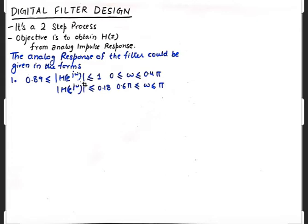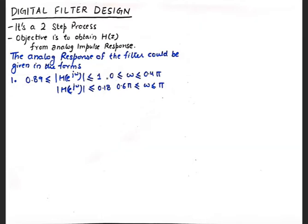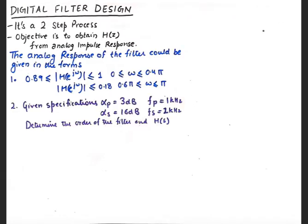In the magnitude format, between 0 to 0.4π the magnitude is between 1 and 0.89, and between 0.6π and π the magnitude is less than 0.18. Another format that could be given in the examination is the attenuation format, where the passband attenuation at 1 kilohertz is very small and the stopband attenuation is very high. We need to determine H(s), so we need to make sure we understand both these formats.